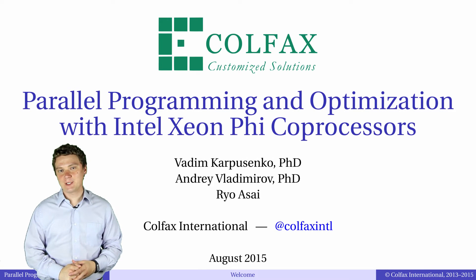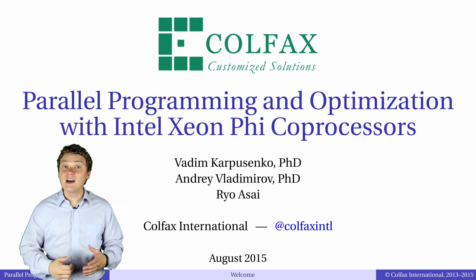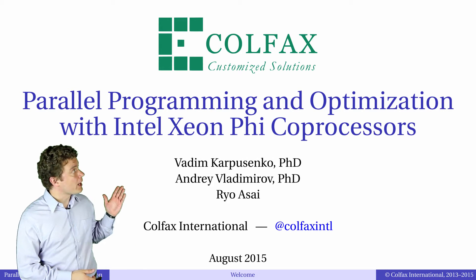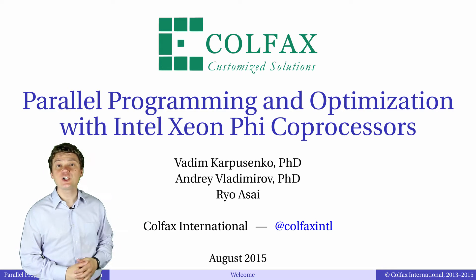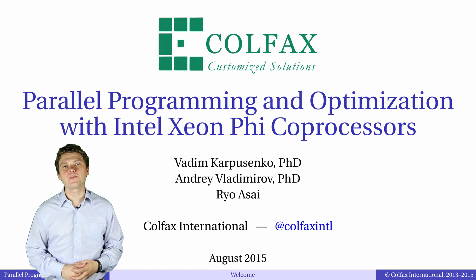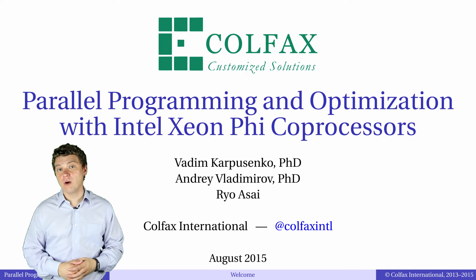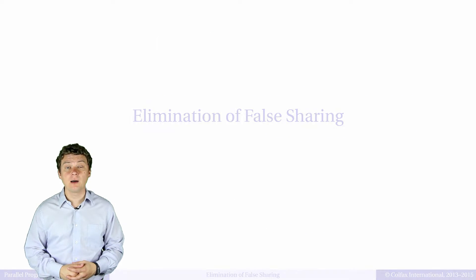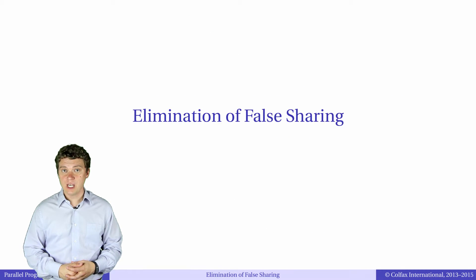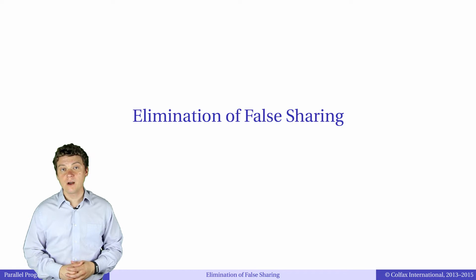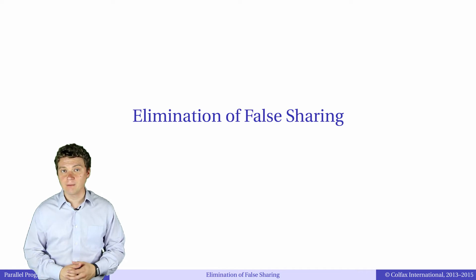Welcome back to episode 5.9 of our video course Parallel Programming and Optimization with Intel Xeon Phi Co-processors. We're continuing the discussion of optimization of multi-threaded applications. In this episode we will talk about a common pitfall in parallel programs: false sharing.